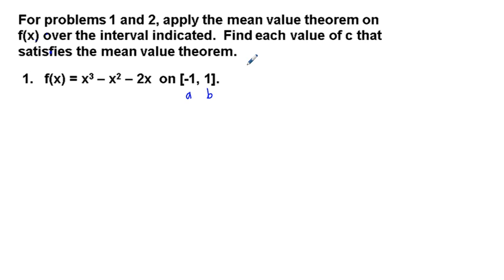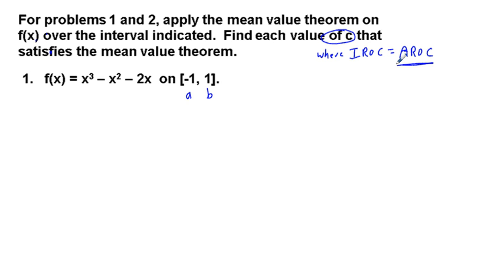What we're trying to find is the value of c where the instantaneous rate of change is equal to the average rate of change. But in order to do that, first we have to find our average rate of change. Average rate of change is equal to f of b minus f of a over b minus a.